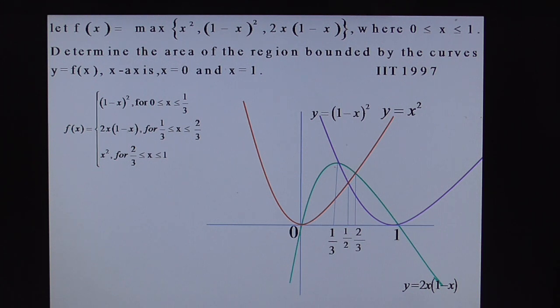For 1 by 3 to 2 by 3 just observe the graph, 2x of 1 minus x that is green line is the upper part. For 2 by 3 to 1, x square that is the upper part. Now let's calculate the area.